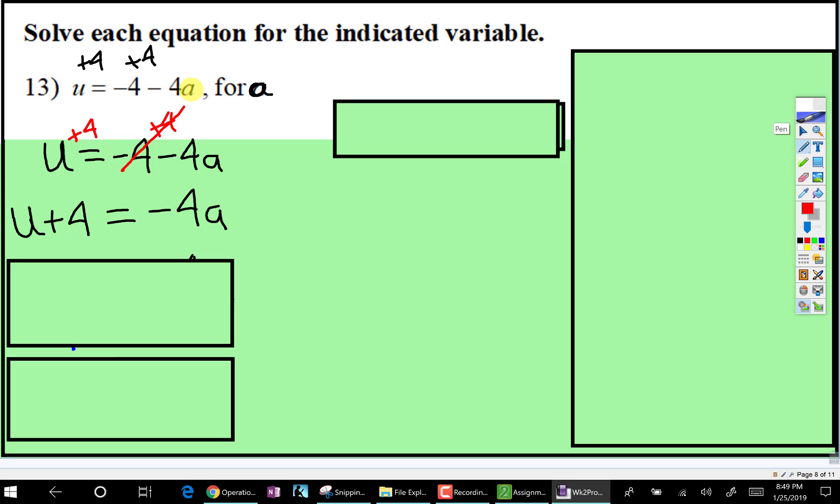Okay, well now the a, the only thing that's left is there's a multiplying negative 4. How do you cancel a multiplying negative 4? What's the inverse of multiplication?